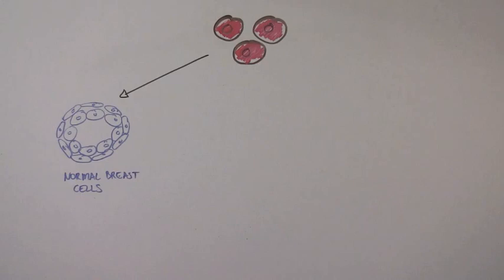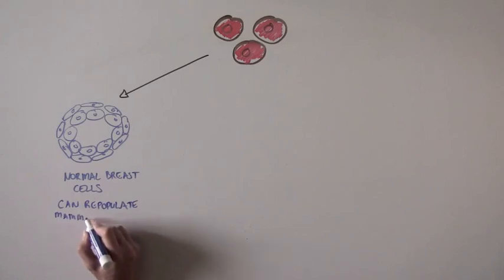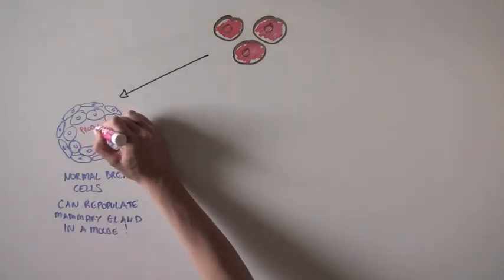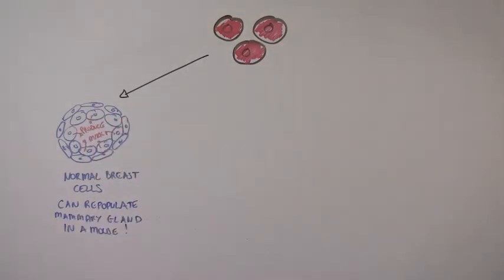But the scientists took this a step further and injected these normal breast cells in a mouse in which the breast tissue had been removed. And they found that these normal breast cells produced by the red cells could repopulate the mammary gland and even produce milk when the mouse was pregnant. So that's great! The scientists have discovered a stem cell that lives in the breast that can make breast tissue. But can it also make other tissues?